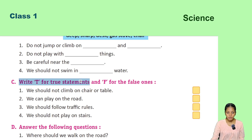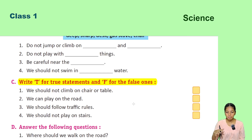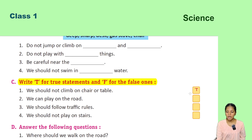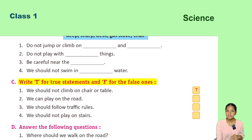Write T for true statements and F for false ones. We should not climb on chair or table — this is a true statement, it is a safety rule. We can play on the road — this is a false statement, we should not play on the road as it is harmful.